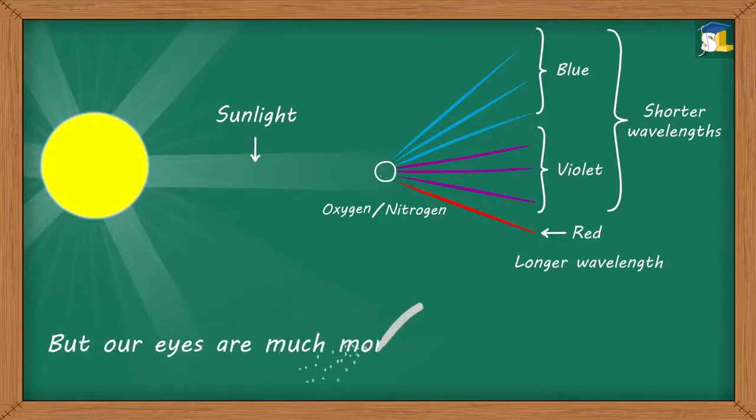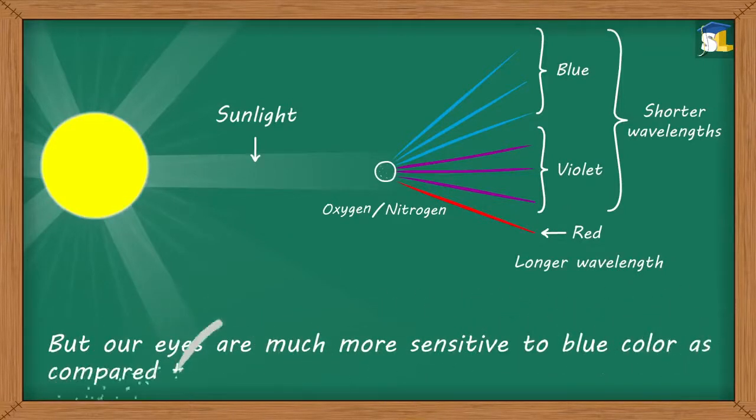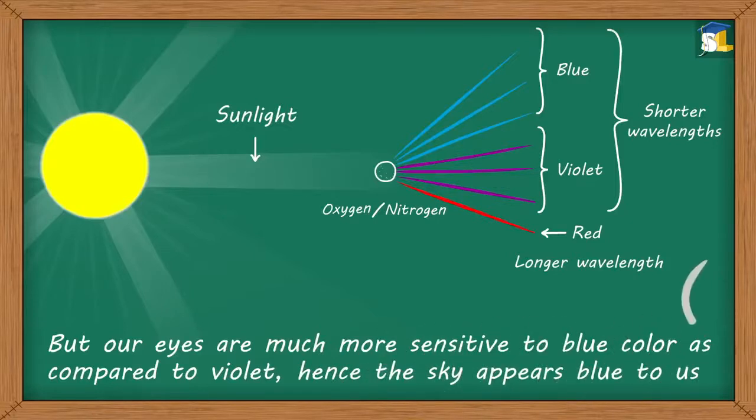But our eyes are much more sensitive to blue color as compared to violet. Hence, the sky appears blue to us.